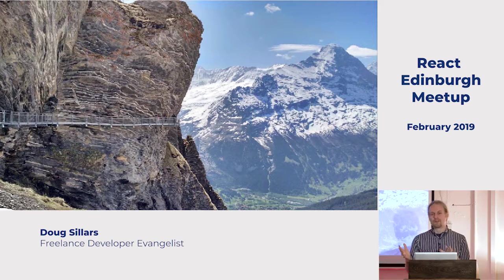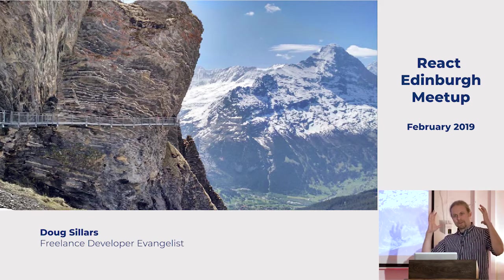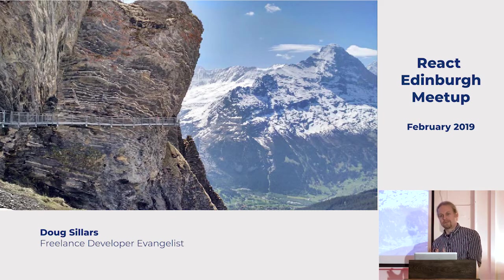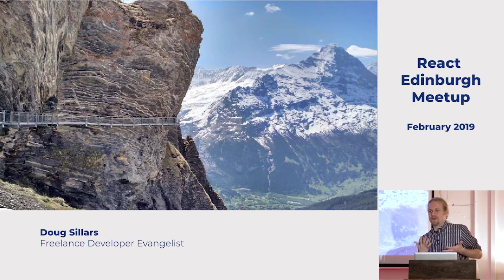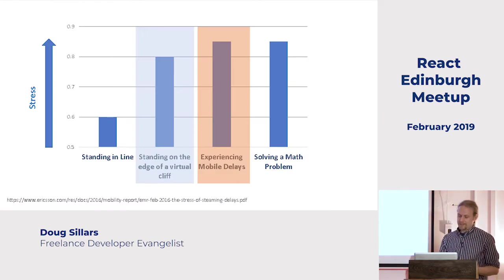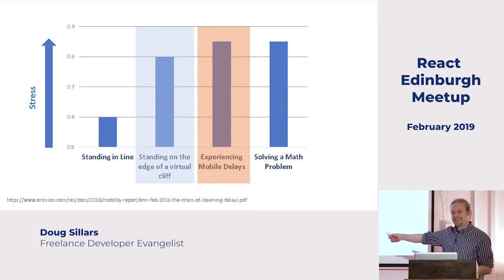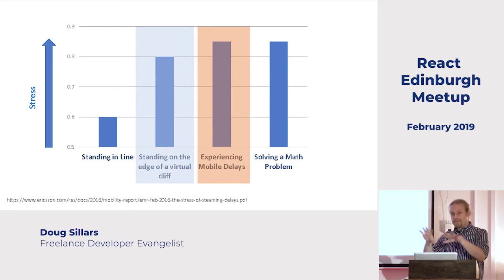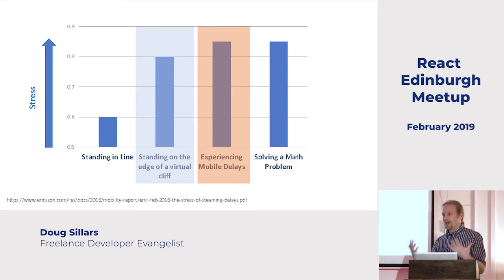About two years ago, Ericsson did a study where they put sensors on people's heads to measure stress responses. They found that thinking about standing in a queue raised your stress response, and thinking about standing on the edge of a cliff really raised it. But interestingly, they found that a slow mobile experience is more stressful than standing on the edge of a cliff. So that feeling we all just had — if you build a slow app or a slow website, that's what your customers are feeling.